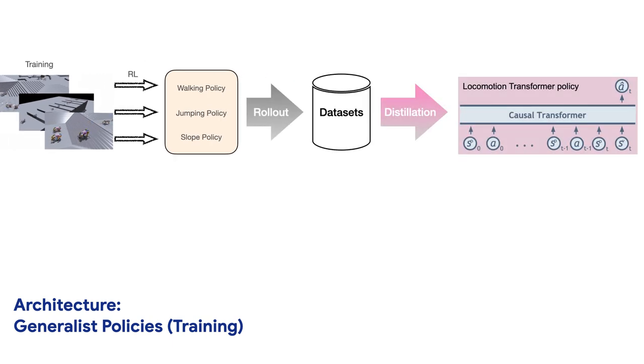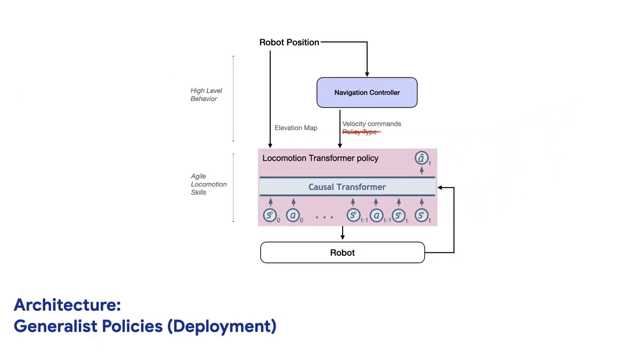Instead, we distill the specialist skills into a single transformer-based generalist locomotion policy, which can handle various terrains and adjust the robot's gait based on the perceived environment and the robot's state.